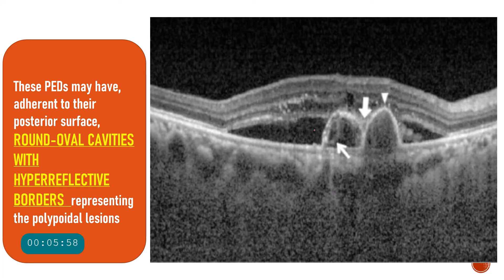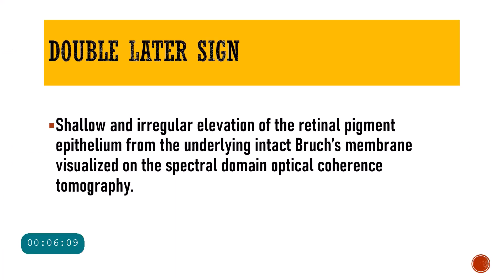Sometimes within the pigment epithelial detachment you will see certain round oval cavity-like lesions. These round oval cavities with hyper-reflective borders are nothing but the polypoidal lesions.